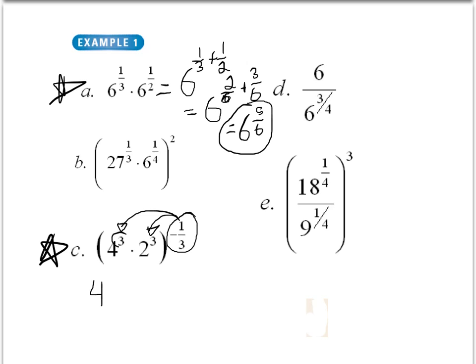When we do this now, we need to multiply this exponent value and this exponent value. When we do that, we get 3 times negative 1 third, so that ends up as negative 1. Then we have 2 raised to the 3 times this negative 1 third, so that also will be negative 1. Then we have 1 over 4 times 2, we have 1 over 8.